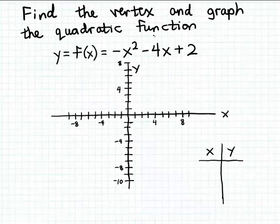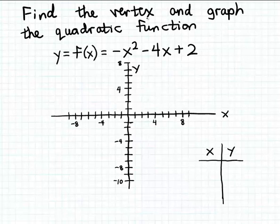When graphing a quadratic function, it's helpful to start by finding what's called the vertex. The vertex is going to be the high point or the low point on the graph. Since the graph is a u-shaped curve that might open up or down, it will have either a high point or a low point depending on the direction, and that point is called the vertex. Let's start by finding the vertex in order to construct the graph.